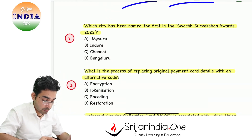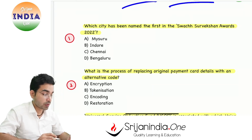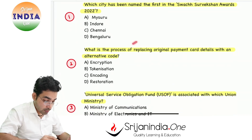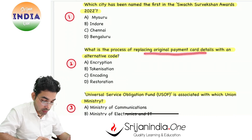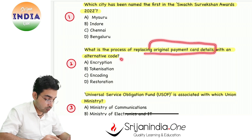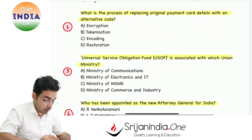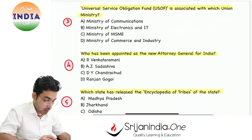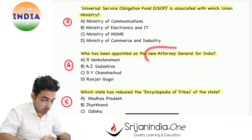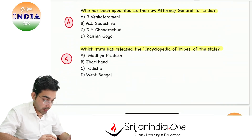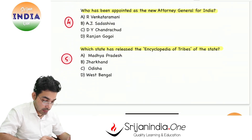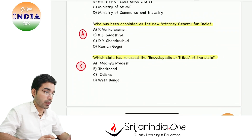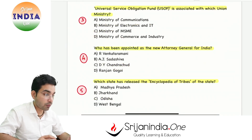Today's questions are: Which city has been named first in the Swachh Survekshan Awards 2022? What is the process of replacing original payment card details with an alternative code — recently in the news? Universal Service Obligation Fund is associated with which Union Ministry? Who has been appointed as the new Attorney General for India? Which state has released the Encyclopedia of Tribes of the state? These are the five questions for today.